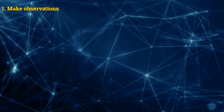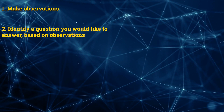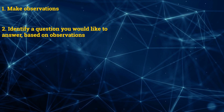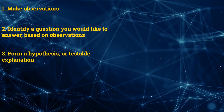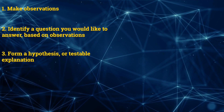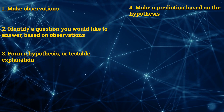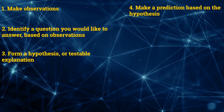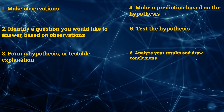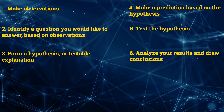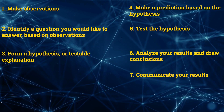The steps are: Number 1, make observations. Number 2, identify a question you would like to answer based on the observation. Number 3, form a hypothesis or a testable explanation. Number 4, make a prediction based on the hypothesis. Number 5, test the hypothesis. Number 6, analyze your results and draw conclusions. And number 7, communicate your results.